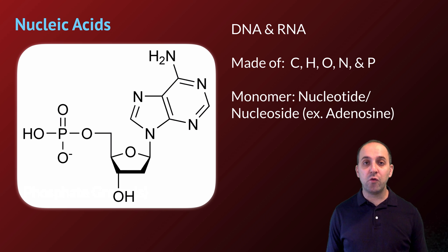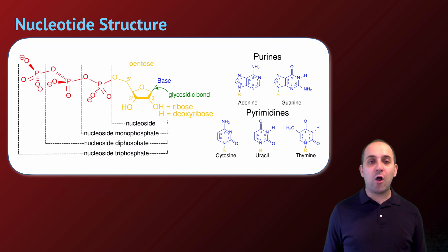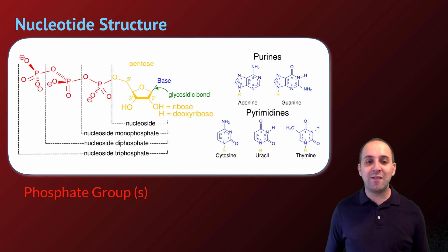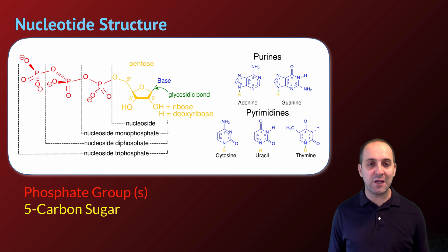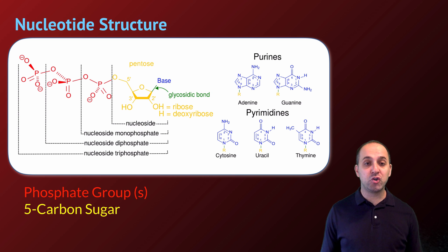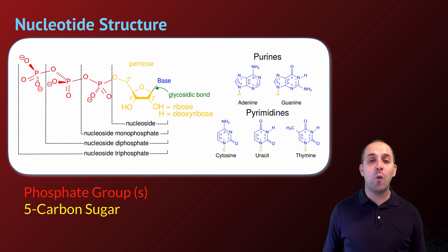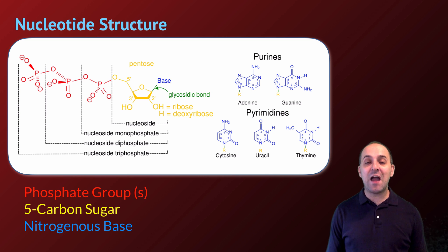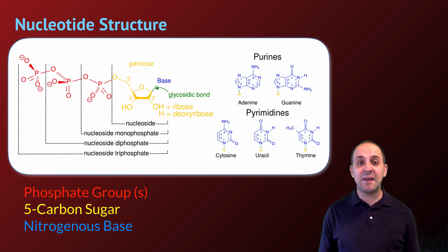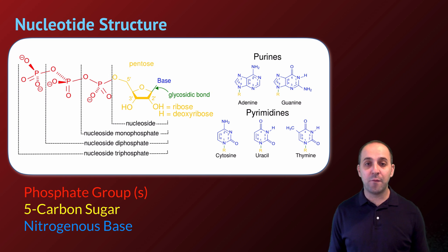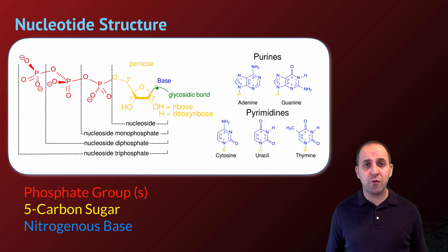When we look at nucleotides, they all have the same basic structure. They've got at least one phosphate group and perhaps as many as three. They've got a five-carbon sugar, which could be either ribose or deoxyribose, depending upon whether we're talking about RNA or DNA. And then they've got nitrogenous bases. There are four nitrogenous bases in DNA and four in RNA. We'll talk a lot more about nucleic acid structure in our information unit, but for right now, this is really what you should be familiar with.